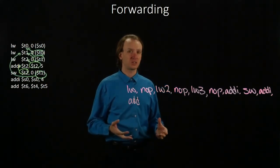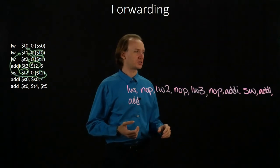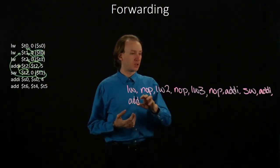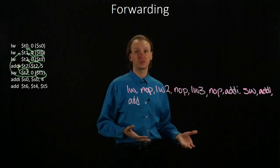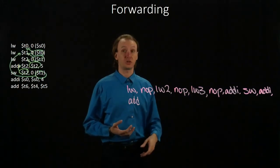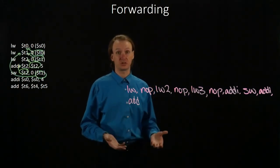So in this case, forwarding wasn't able to get rid of all of the no-op instructions in this code, but it was able to reduce a lot of them. I now have three no-op instructions that I'm using to add bubbles into my pipeline so that some of these load word instructions can complete before I use their results.